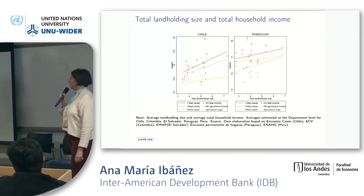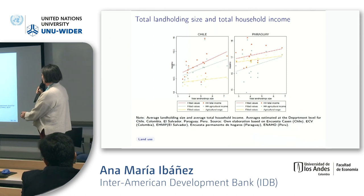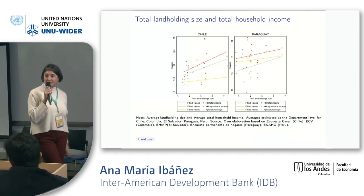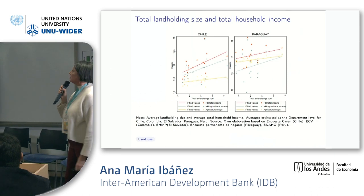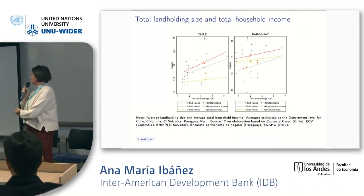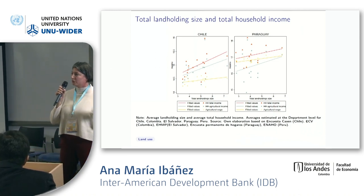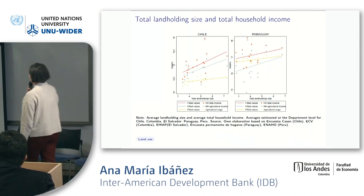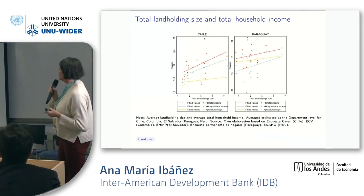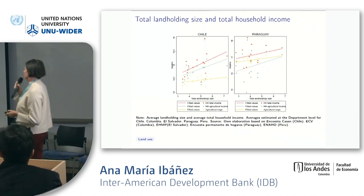For Chile and Paraguay, there is a steep relation for household income, and for agricultural income we have a very steep positive correlation. So in all the countries we have seen so far, there is a positive correlation between farm size and agricultural income, total household income, and wages. We believe this is important for all discussions about agrarian reform, because one of the rationales for agrarian reform is that small producers are the most productive ones — and what we're finding here is that this is not necessarily the case.